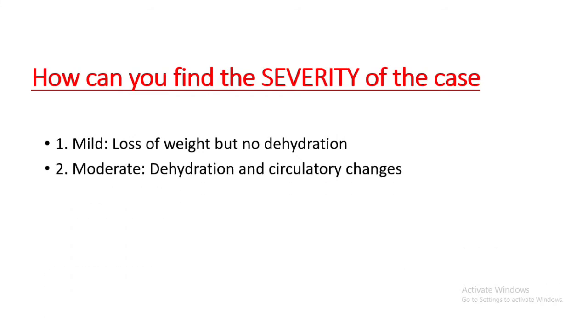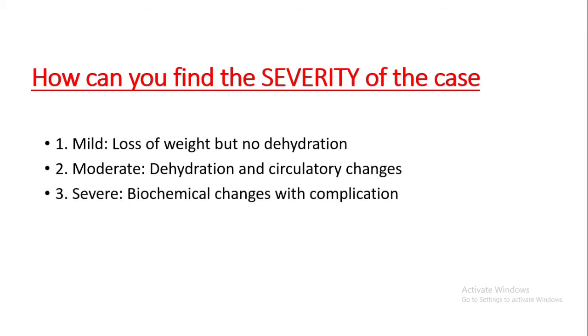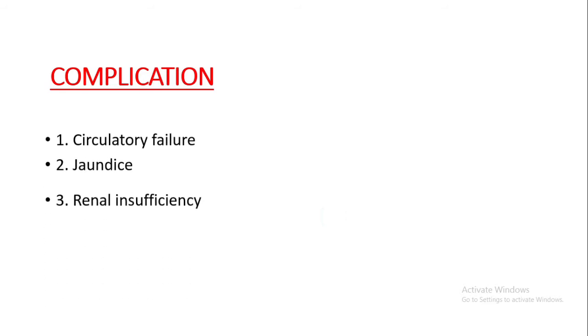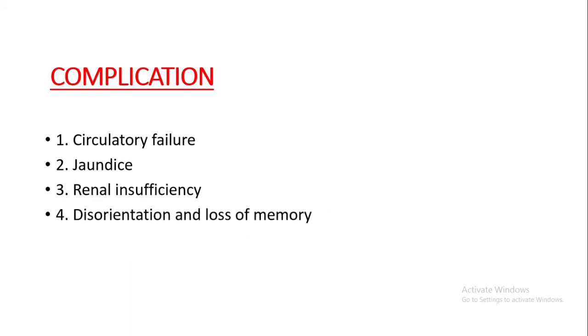Moderate cases are characterized by dehydration and circulatory changes. Severe cases have biochemical changes with complications. The fetus is usually unaffected, but risk of low birth weight and premature birth is present. In severe cases, complications may include circulatory failure, jaundice, renal insufficiency, disorientation, and loss of memory.